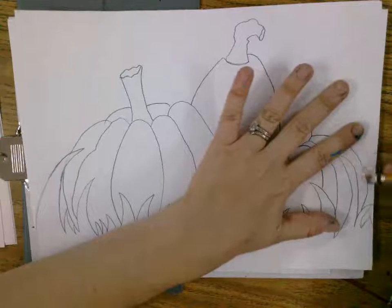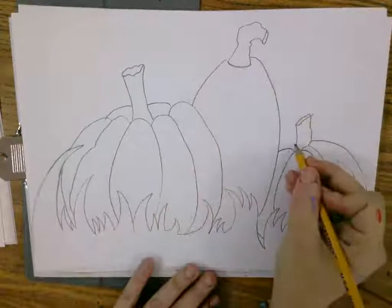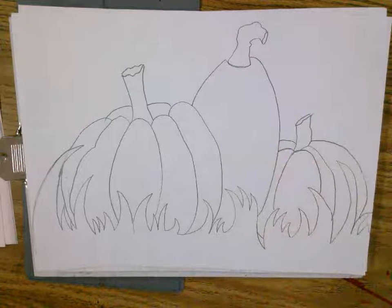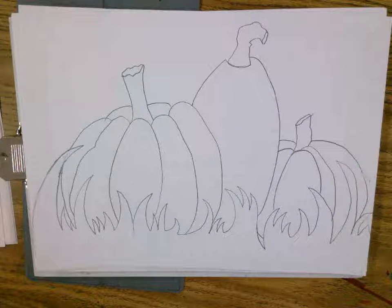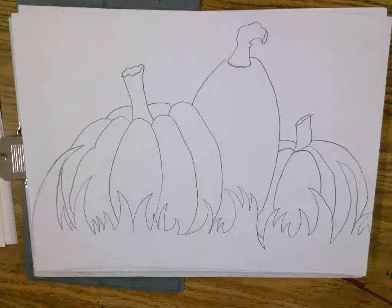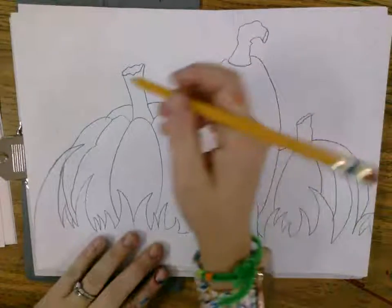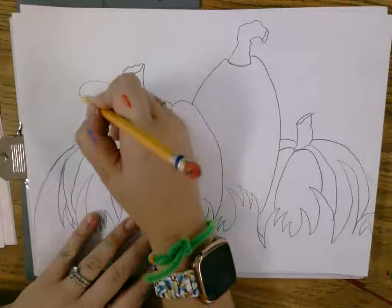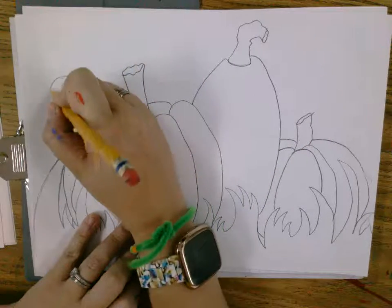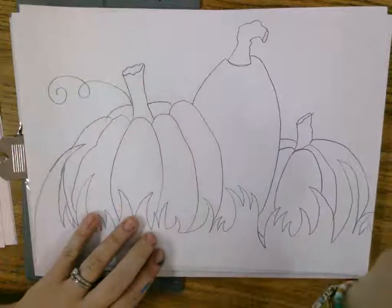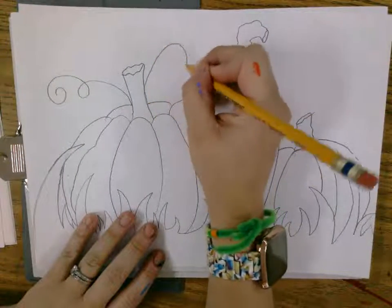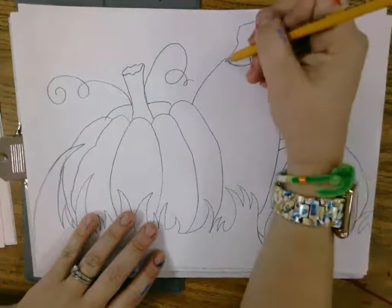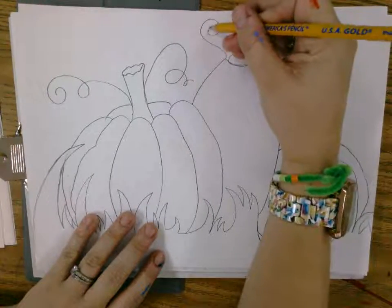Remember, this is the creative part. So, think about how you want your leaves and your vines to come off. So, you can make some leaves and some vines with some curved lines like this. Or some wavy lines like this. And then make sure that you add those leaves on your plants.